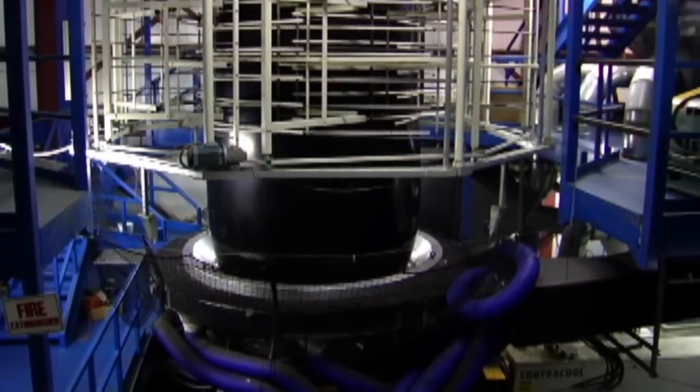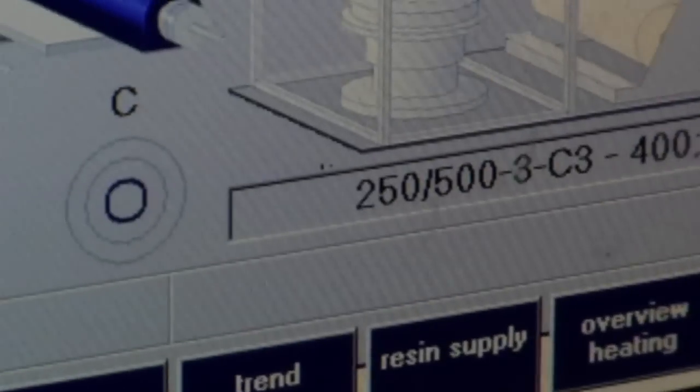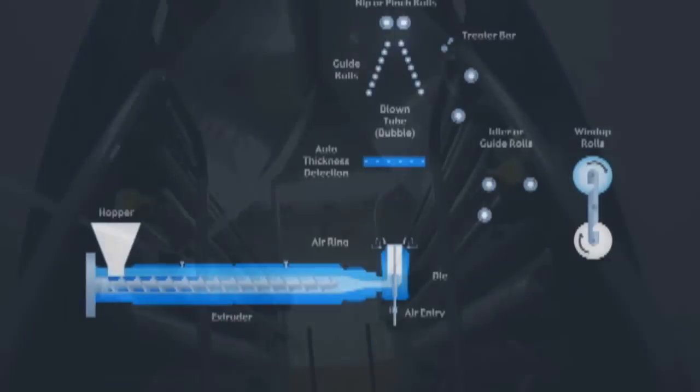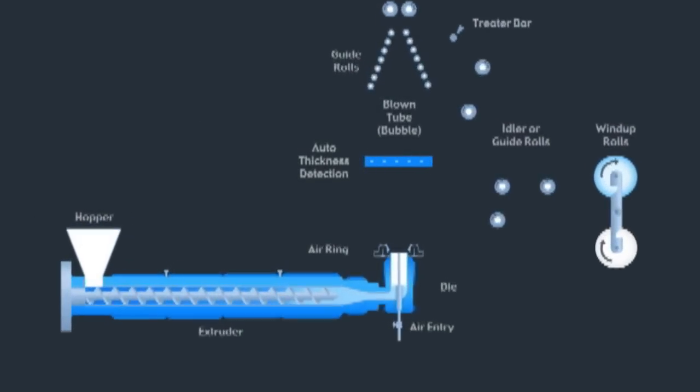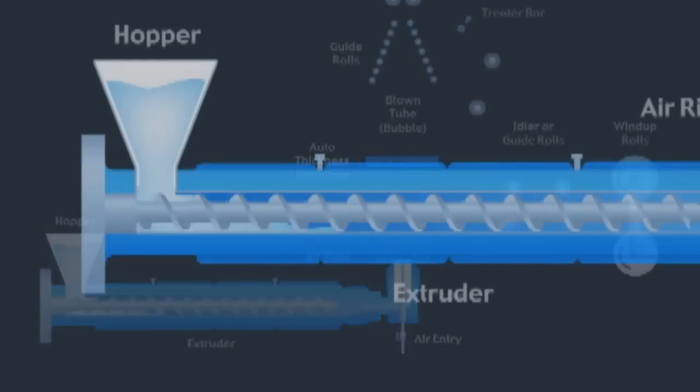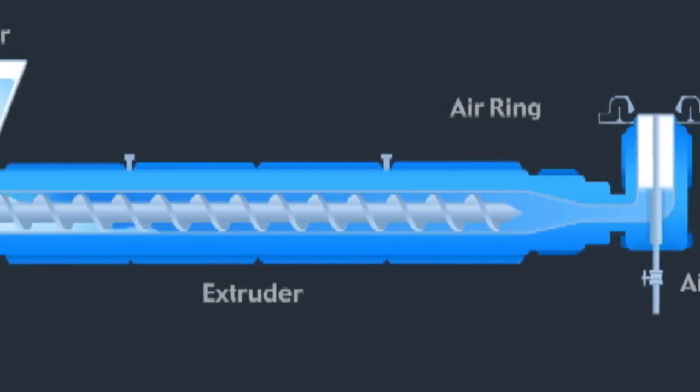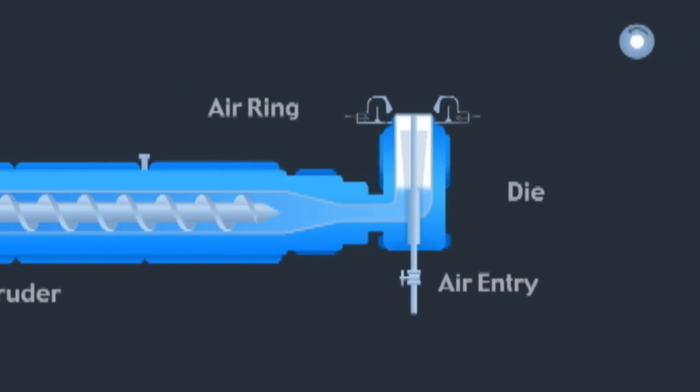Raven uses a blown film process to manufacture a broad range of high-performance film products. We start with plastic pellets and additives conveyed into hoppers. Then extruders melt and force the molten resin into a die that forms a sleeve.